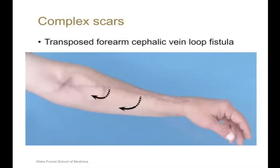Innovative surgeries and complex scars can give an idea about the type of unconventional fistulas. Here you can see a long scar in the forearm extending from the wrist to the elbow, where the forearm cephalic vein has been mobilized in a loop configuration and anastomosed to the brachial artery at the elbow. The loop configuration looks similar to an arteriovenous graft, but unlike the looped graft, the surgical scar is long and extends along the entire length of the forearm. It is important to differentiate between a loop graft and a loop AV fistula because the cannulation techniques are different.